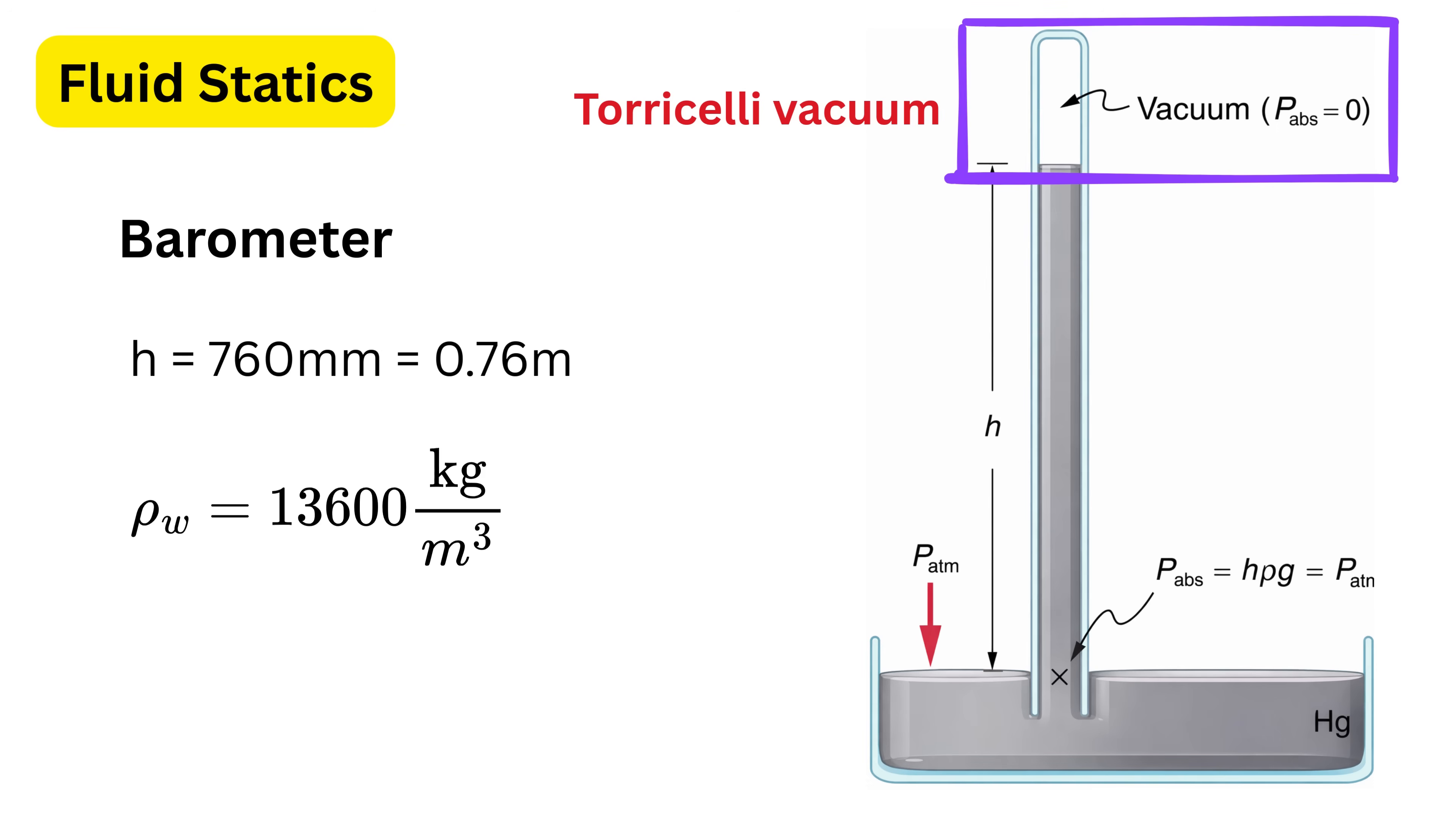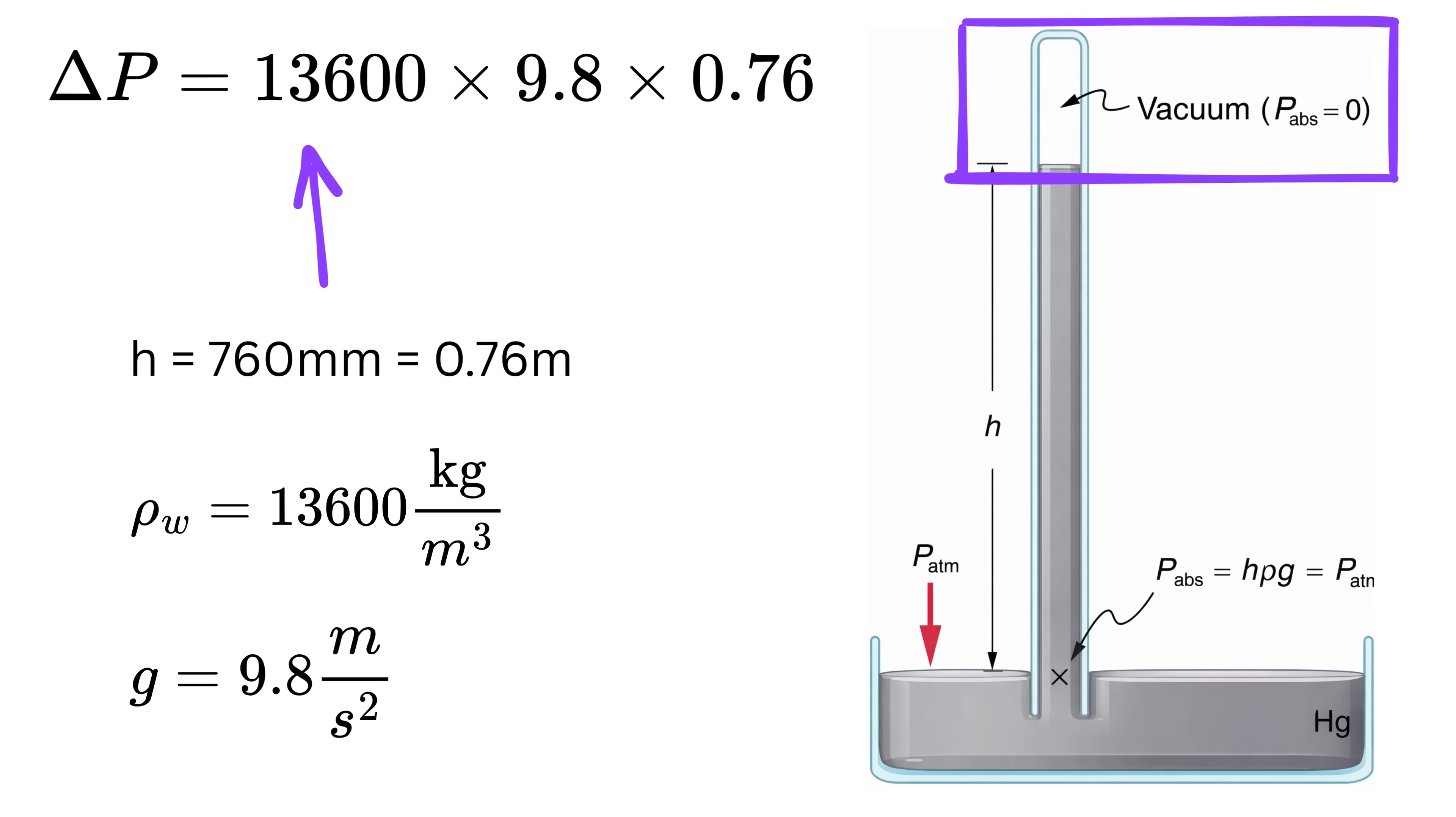The density of mercury is 13,600 kilograms per meter cube. Use gravity as 9.8 and substitute all of them here to get difference in pressure as this.